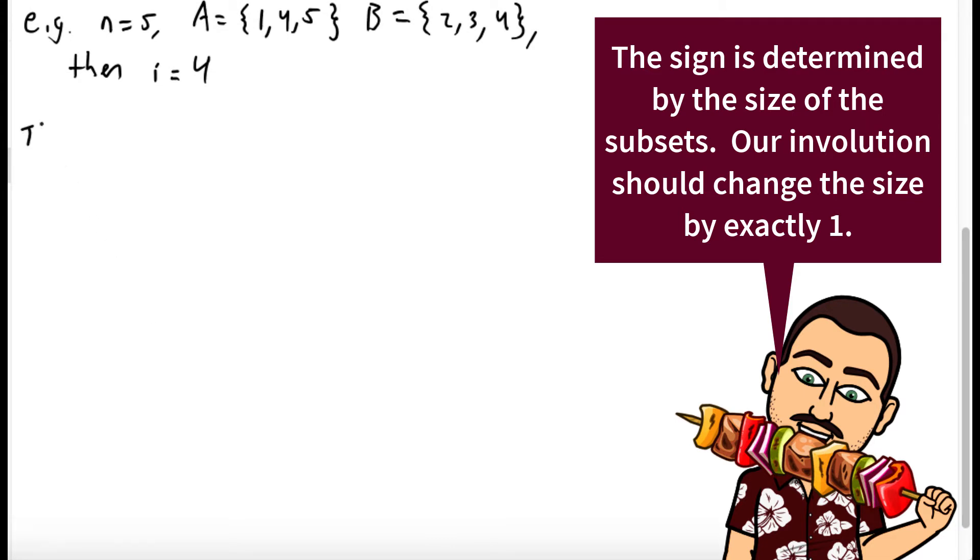Something to note is it's possible that no such i exists. Maybe you got to think through that a little bit, but it is possible. Let's see an example of that. If we have n equals 4, and A is the subset 1, 4, and B is the subset 2, 3, there's no number that's in both or in neither. Every number is in exactly one of these sets.